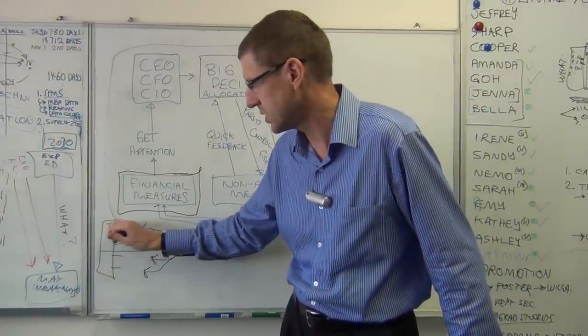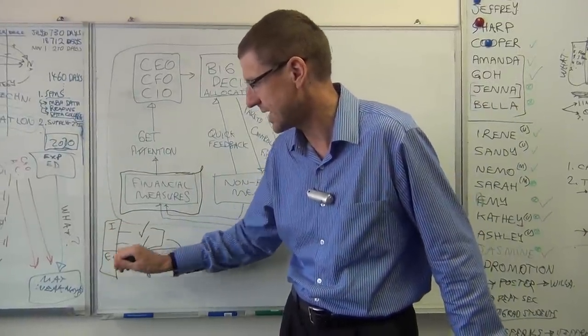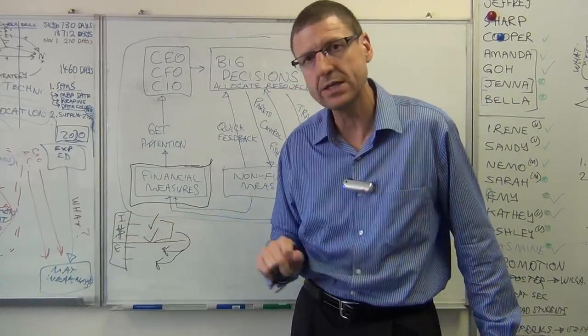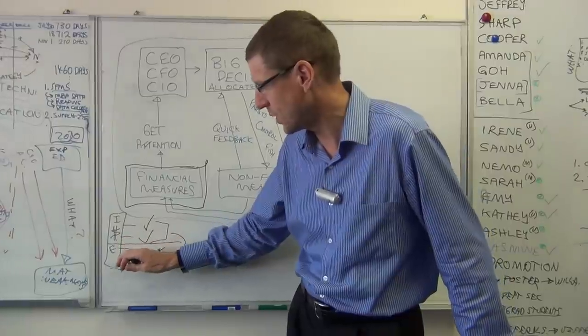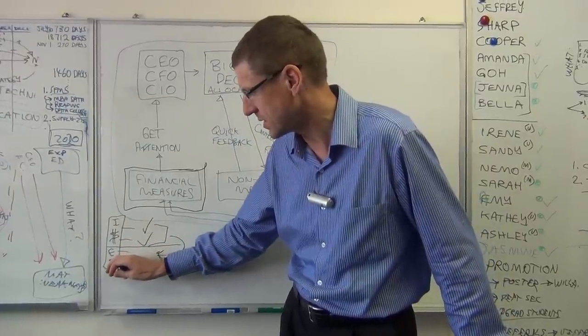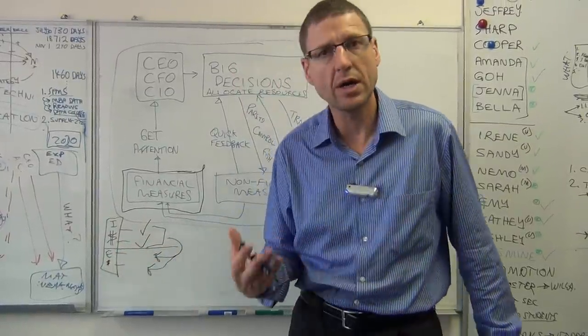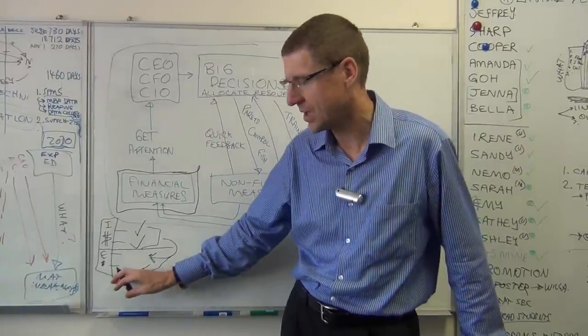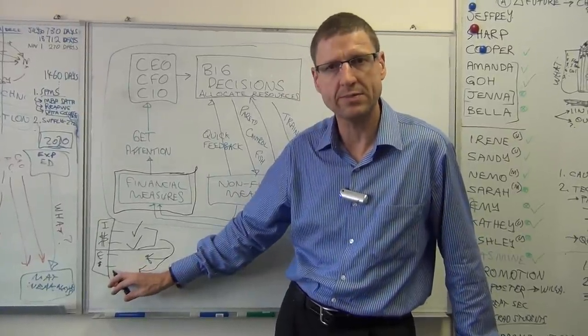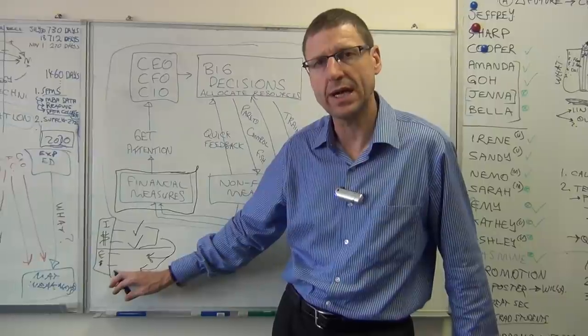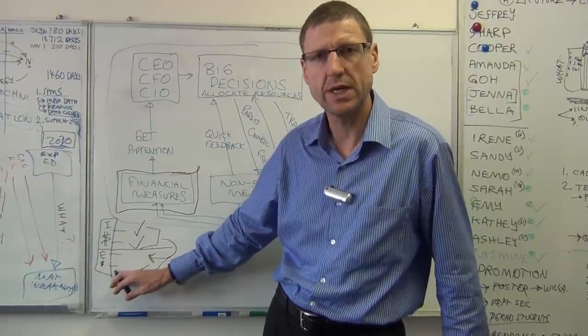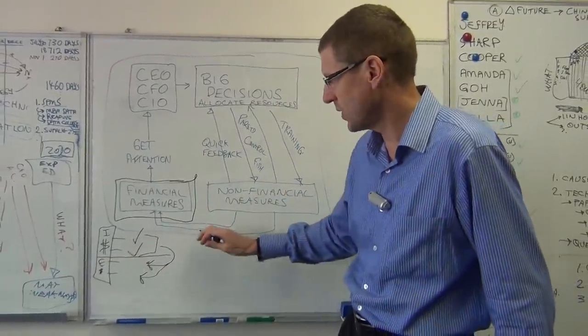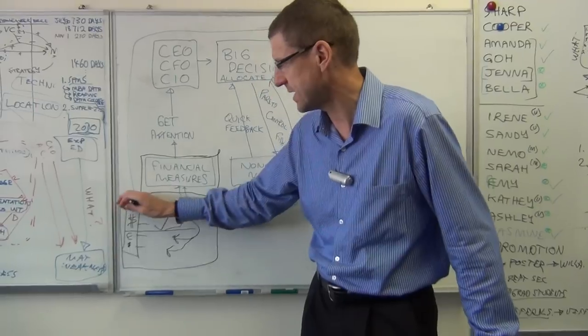There are two internal and two external categories. And the general rule is if we spend more dollars here on the internal category, then we can reduce the dollars or costs in the external category, especially when we're talking about warranty claims for bad quality. And we'll go over several examples in today's lecture about bad quality that has occurred. So we will look at financial measures in that sense.